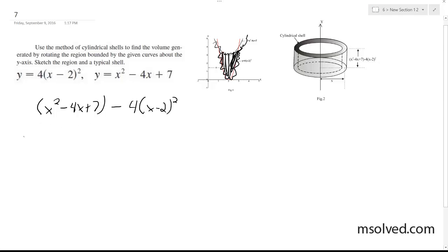So when you do this, you get negative 3x squared plus 12x minus 9. Alright, so now we're ready to do this.